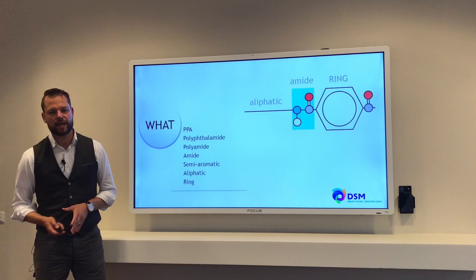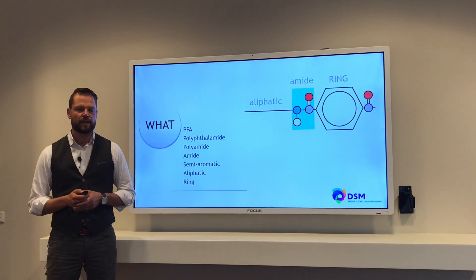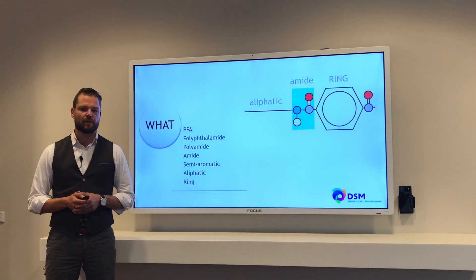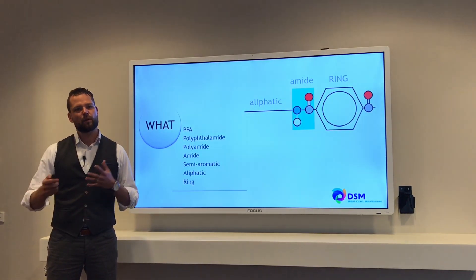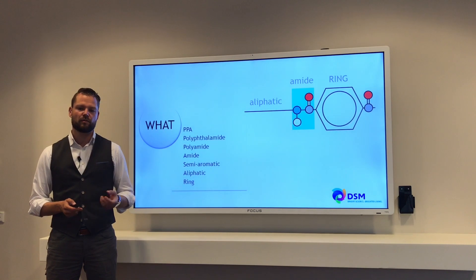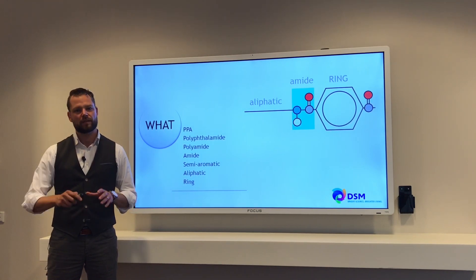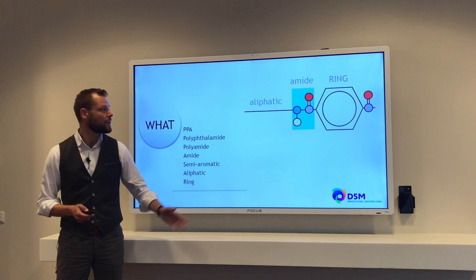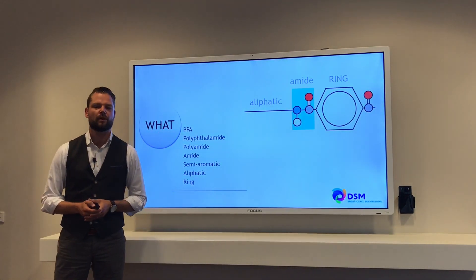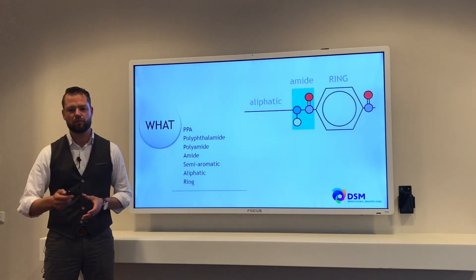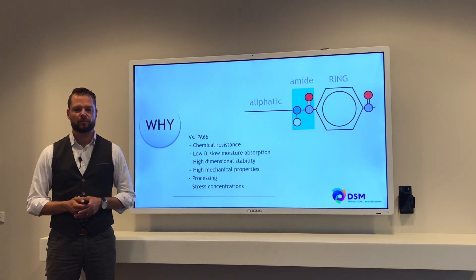Again, welcome. In the first part we covered what a PPA is. A PPA is a polyphthalamide. It's part of the polyamide family. There we also covered the importance of the amide groups. It's a semi-aromatic polyamide. As you can see over there, you have the straight part, the aliphatic part and you have the ring structure. So that is in short what we covered in the first part.